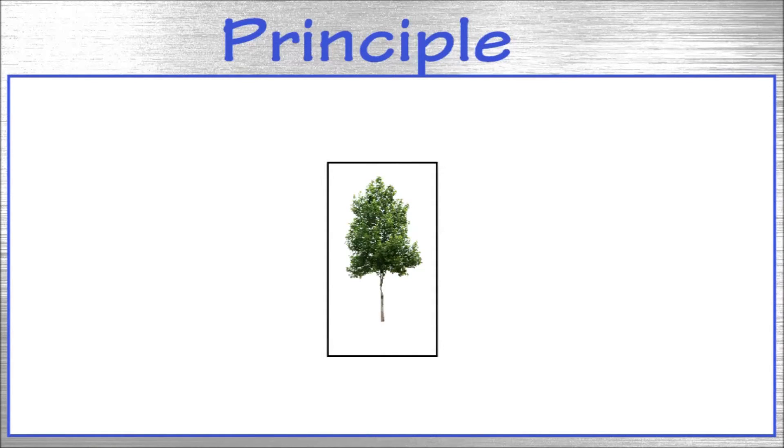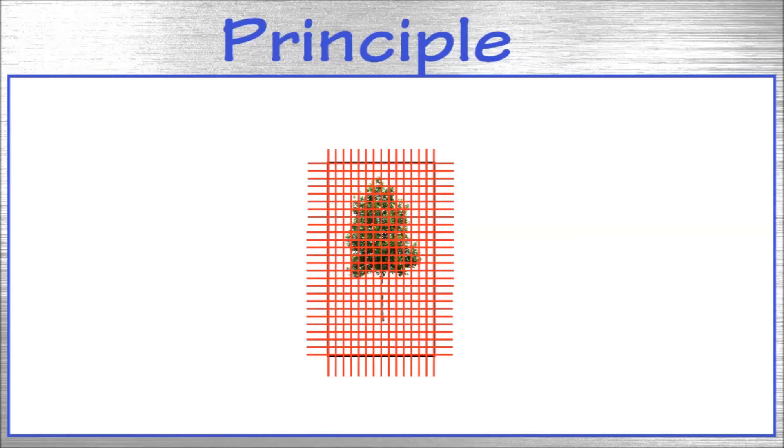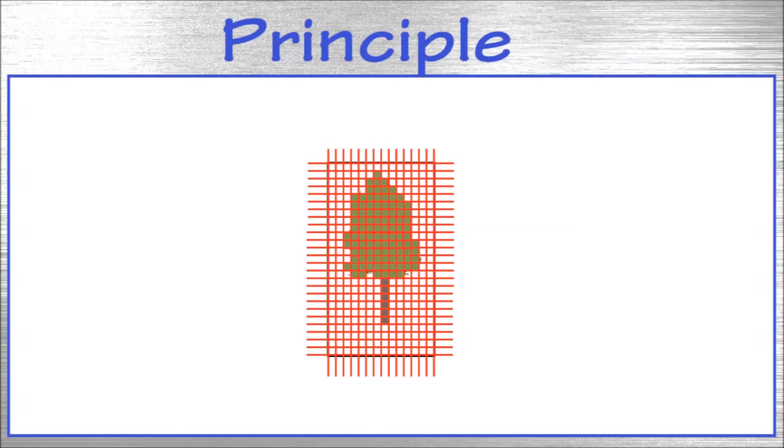In a digital camera the image is divided into pixels. The light intensity of each pixel is stored. If the image is reproduced it will look something like this. The only difference instead of the few pixels here in this example there will be millions of them in a real camera to create very detailed images.